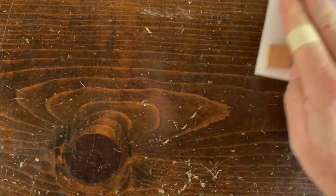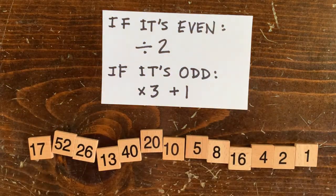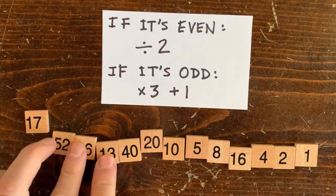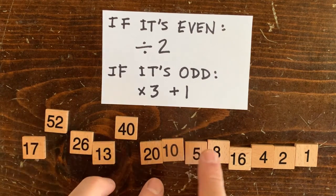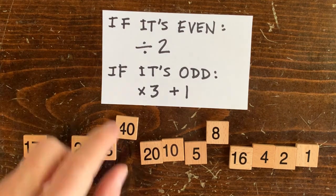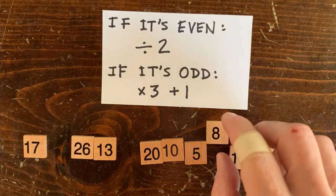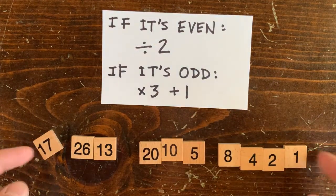Okay, the next thing we did was streamline the 3n plus 1 operations. Here's the sequence starting at 17 again. Notice that every time we hit an odd number and apply 3n plus 1, the next number is even. So we cut out the intermediary and just go straight from 17 to 26, from 13 to 20, and from 5 to 8.